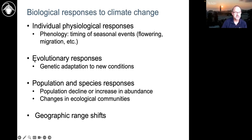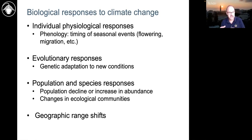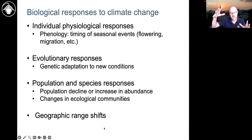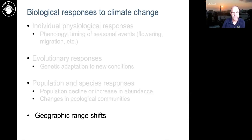We're also seeing evolutionary responses — genetic adaptation to new conditions, with natural selection changing how genotypes adapted to drought or warmer temperatures may do better. Then we see population responses: populations decline or increase, and as competition and disease are affected, we see changes in ecological communities. At the largest scale, we see geographic range shifts, and that's really the scale emphasized in this workshop and the focus for most discussions about responses and conservation.